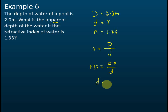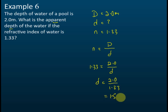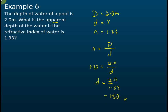We use the formula n equals real depth over apparent depth: 1.33 equals 2.0 divided by apparent depth d. Therefore, the apparent depth is 2.0 divided by 1.33, which equals 1.50 meters. Apparent depth is always less than real depth — real depth is 2.0 m and apparent depth is 1.5 m. If your apparent depth comes out more than the real depth, something is wrong.